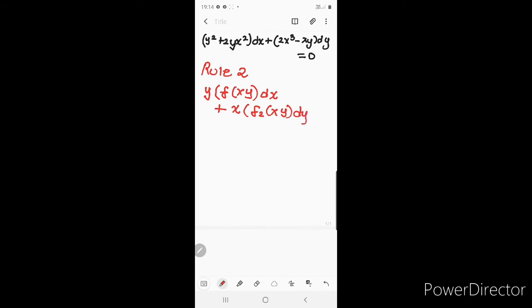So let me check. Let me take y common from these terms, so what will remain is (y + 2x²) dx. Plus now what I have to take common from the second term is x: x(2x² - y) dy = 0.